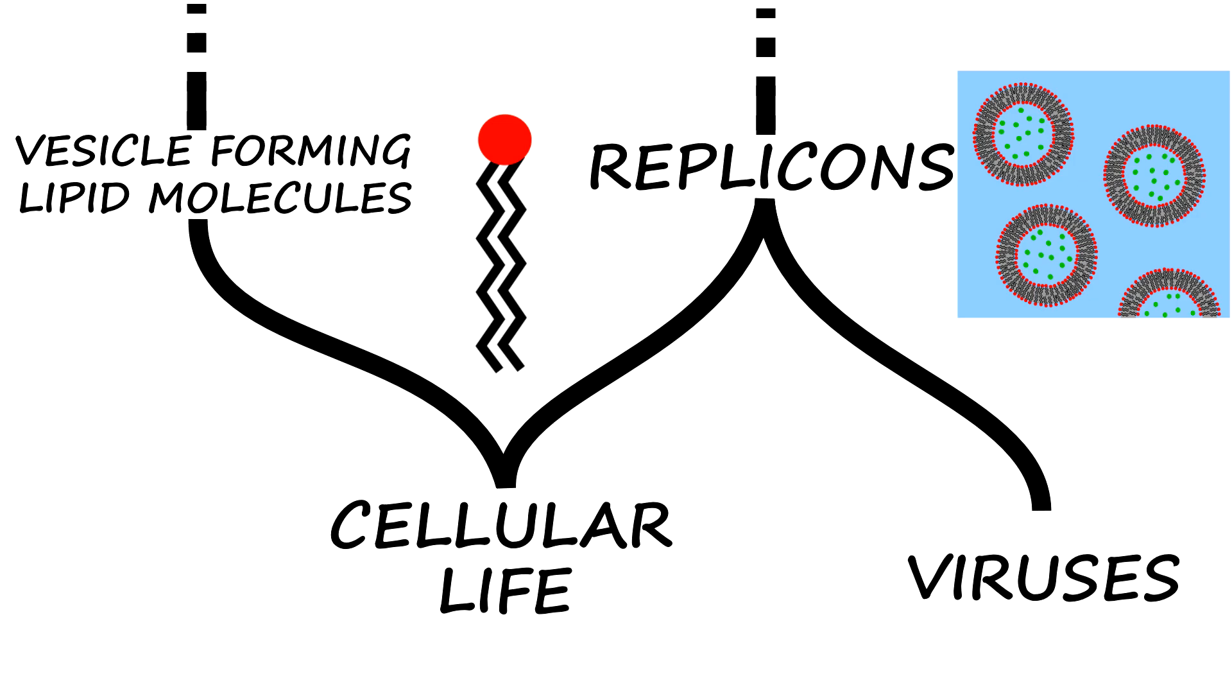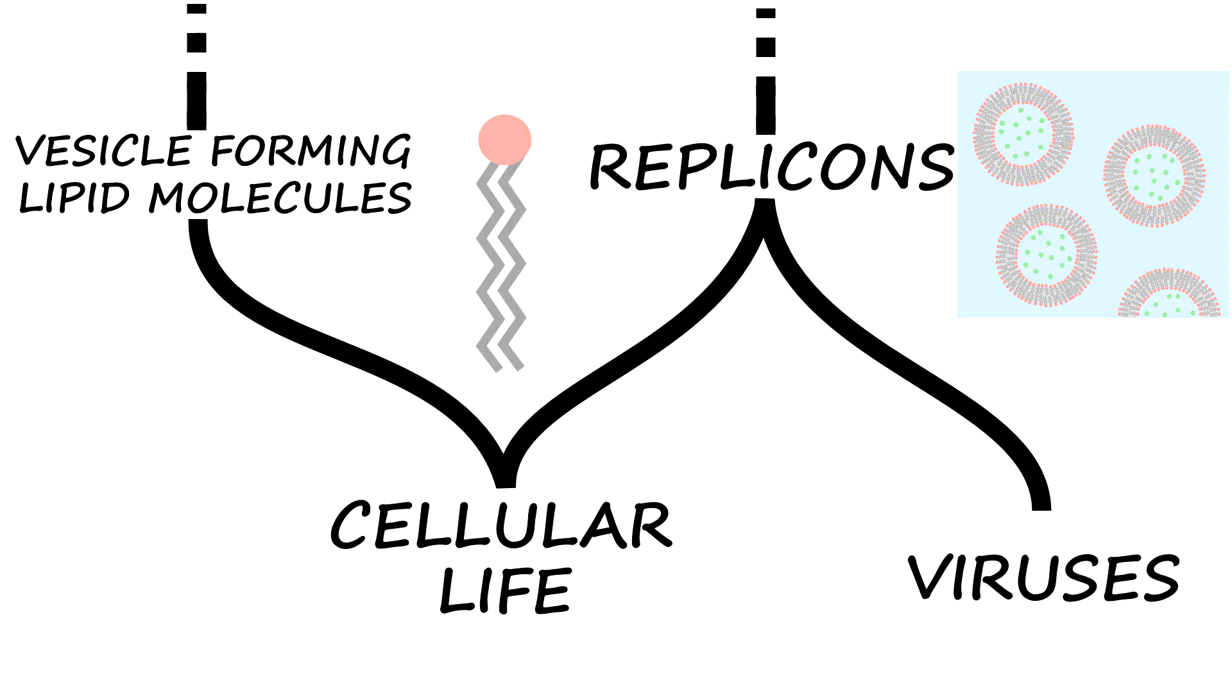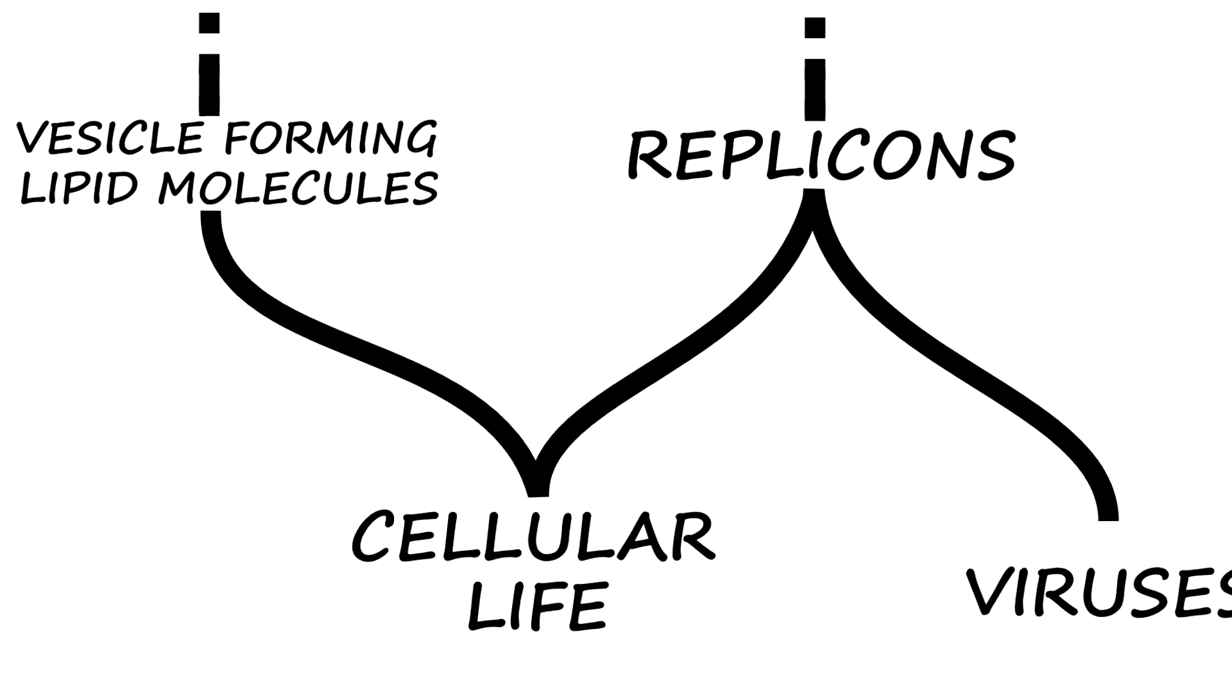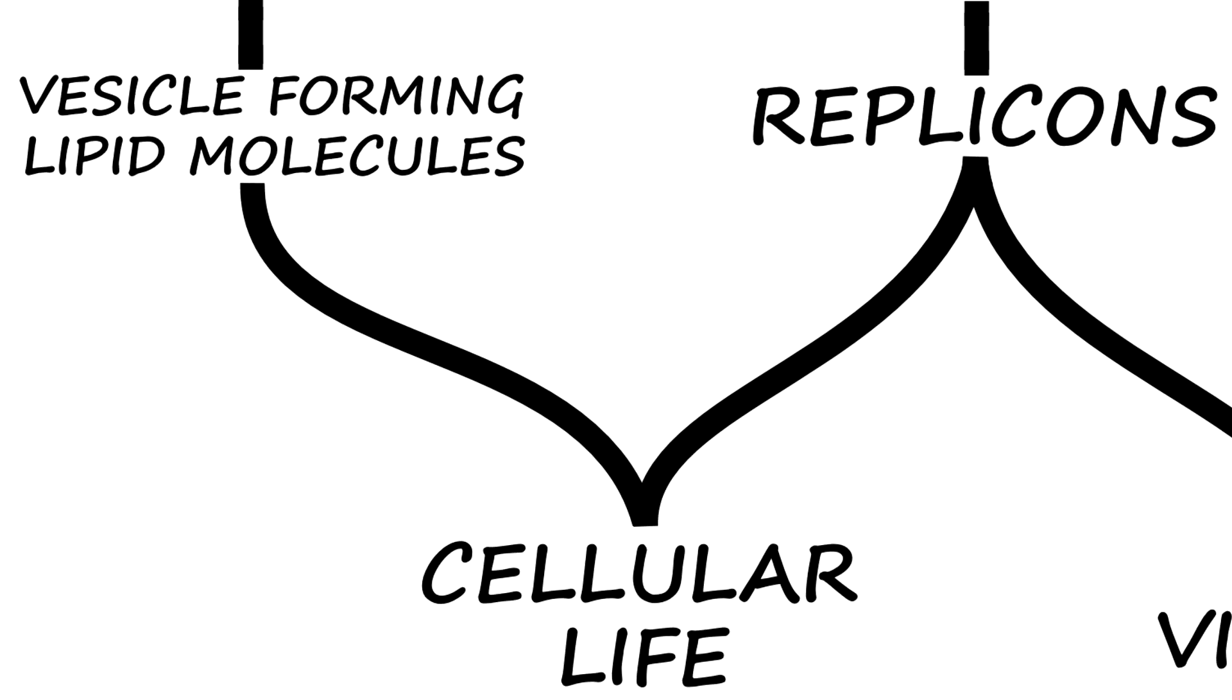As we can see, the replicons went down two different paths according to their environment. The ones close to the food source became enclosed by these vesicles as they formed from the lipid-like molecules. These became living cells.